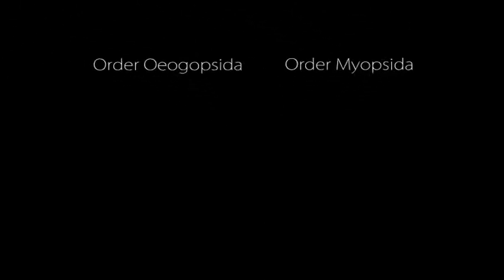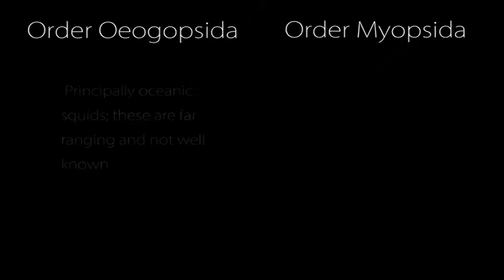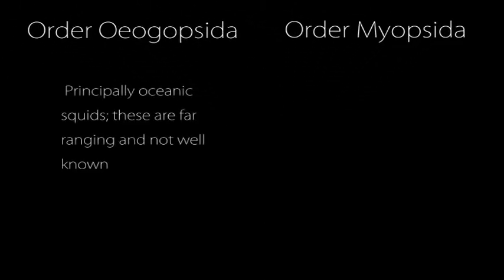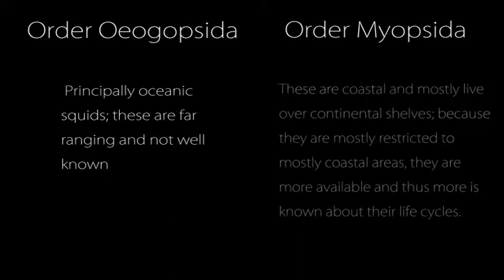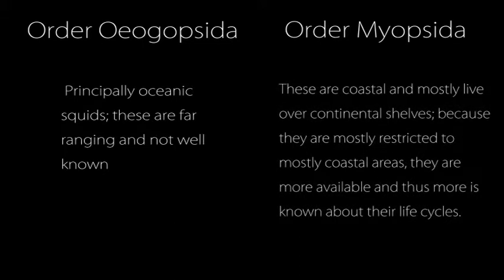These true squids, or free swimmers, have two sub-orders. Order Oegopsida — principally oceanic squids. These are far-ranging and not well known, and include deep-sea squids and those in the pelagic zone.